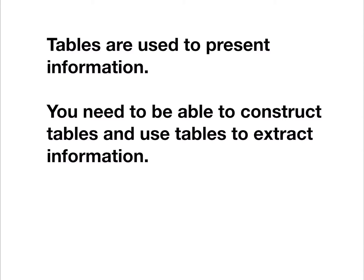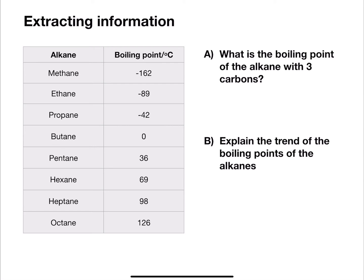Let's start by looking at extracting information. Here we've been given a table of alkane boiling points. Part A requires us to extract specific information from the table. We need to extract the boiling point of the alkane with three carbons.